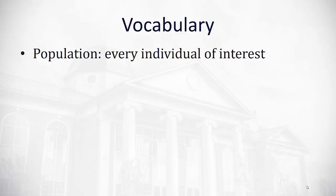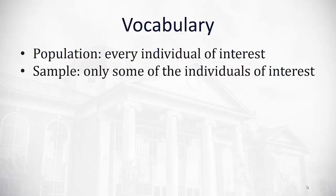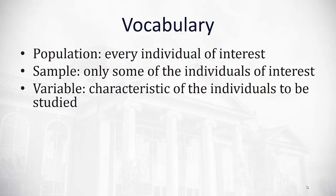First, a population. The population is every individual of interest in a study. It's usually very large. Versus a sample, which is only some of the individuals of interest. Usually easier to get a hold of a sample than a population.